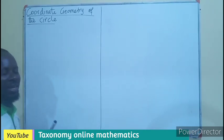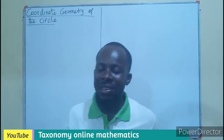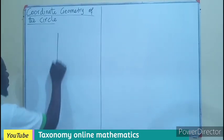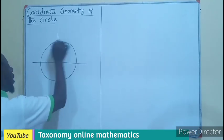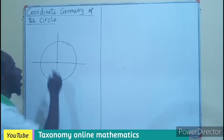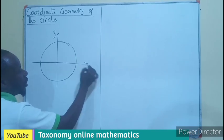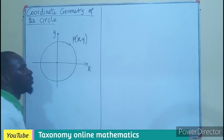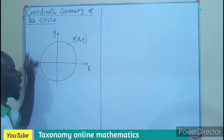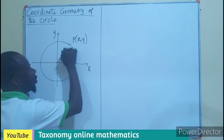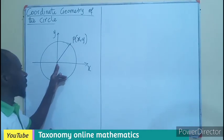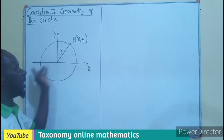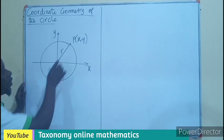We can take the coordinate geometry of a circle which has its center as the origin of the XY plane. If a circle is drawn with its center at the origin of the XY plane, we have the Y axis and the X axis. If we have any point P — it could be anywhere on the circle — and we join the center to that point, that line from the center to any point on the circumference gives us the radius.